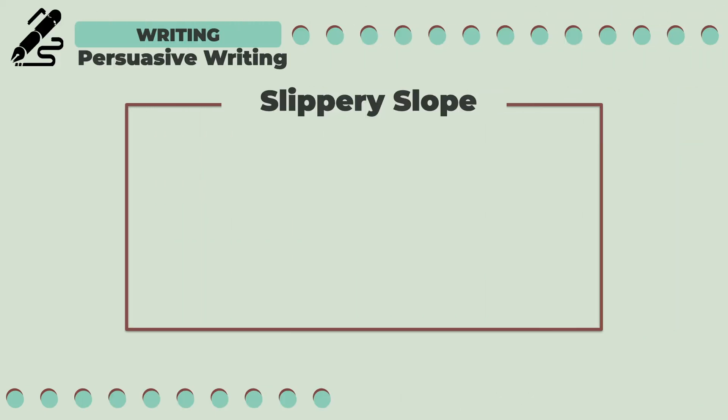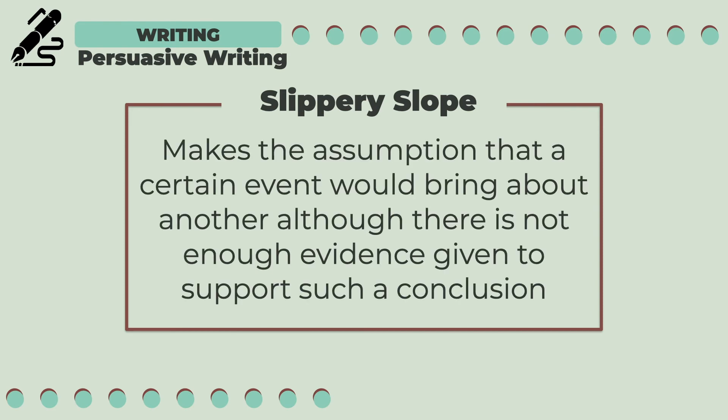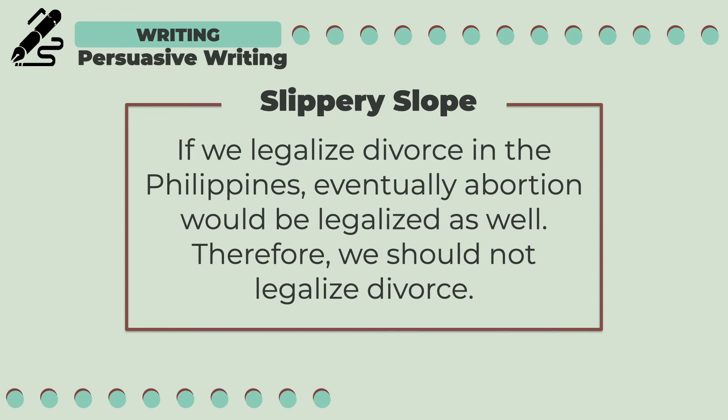The last type of logical fallacy we will discuss is slippery slope. This is making an assumption that a certain event would bring about another, although there is not enough evidence given to support such a conclusion. For example: "If we legalize divorce in the Philippines, eventually abortion would be legalized as well. Therefore, we should not legalize divorce." This is an example of a slippery slope fallacy, as it assumes that if divorce is legalized, abortion would be legalized as well, without enough evidence to support this conclusion.